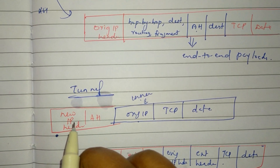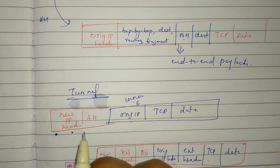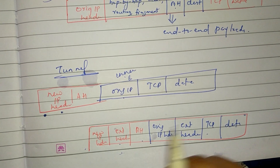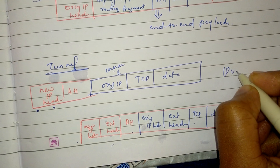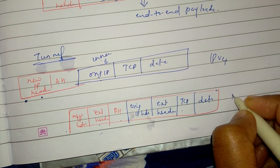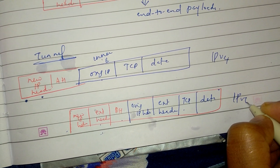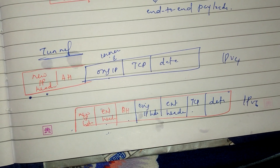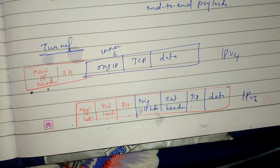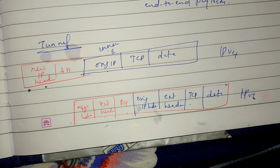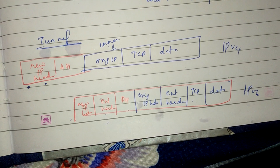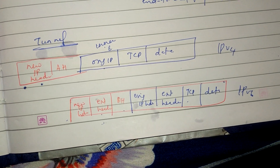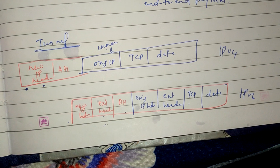For IPv4 and IPv6, the outer IP header is protected, except for mutable and unpredictable fields.